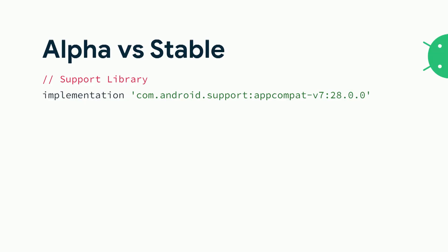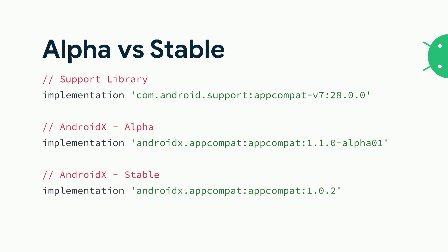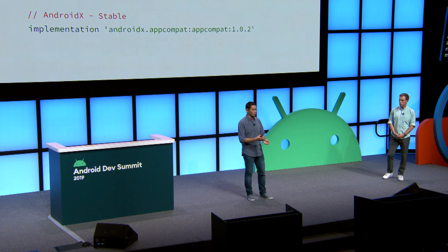When you run the migration tool, you may get an alpha or stable version of the library depending on the most recent release. The tool might migrate AppCompat to an alpha version. Depending on your particular needs, you may want the alpha version or you may prefer stable. You'll need to go back and manually check which version it migrated to and select the version appropriate for your needs. You can find more about these versions in the mapping table covered in our resources section.